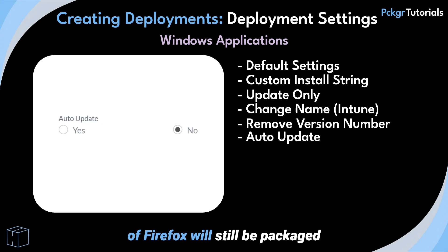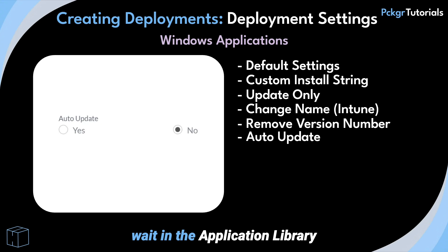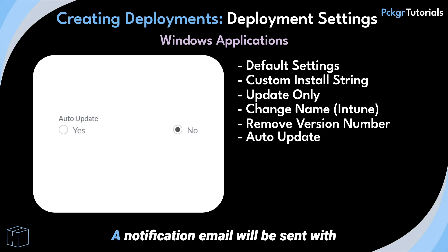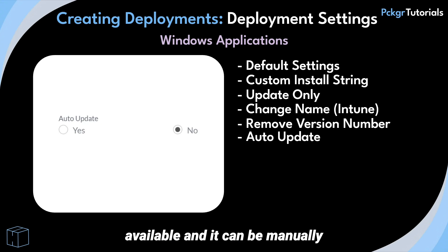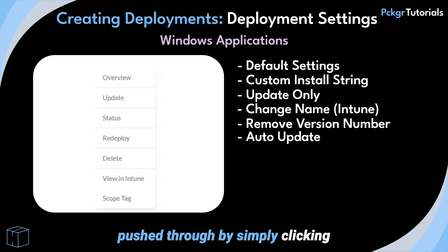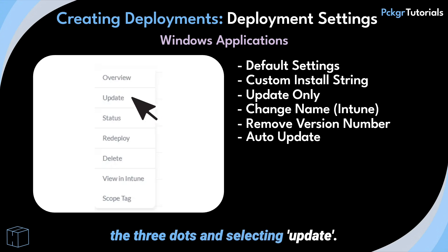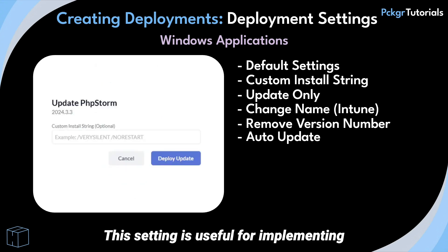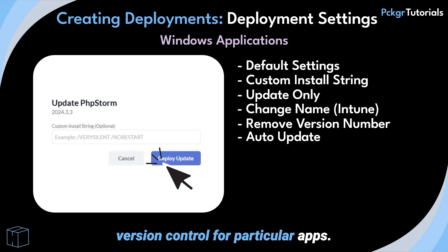The Auto Update option refers to allowing the new version of Firefox to be pushed to Intune for deployment as soon as it has been tested and packaged by Packager. If No is selected, the new version of Firefox will still be packaged and ready to push; however, it will wait in the application library until it is manually pushed. A notification email will be sent with an alert that there is a new version available, and it can be manually pushed through by clicking the three dots and selecting Update. This setting is useful for implementing version control for particular apps.